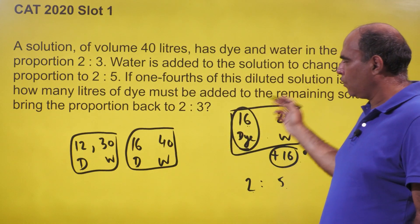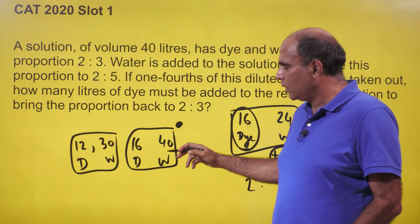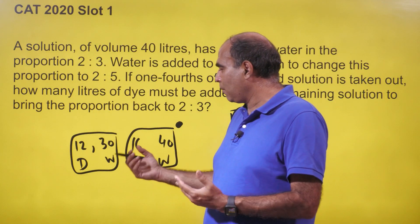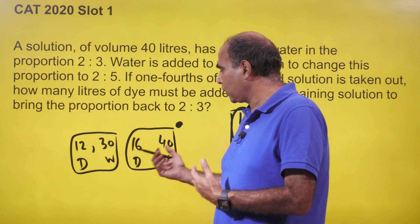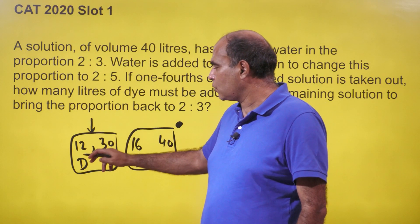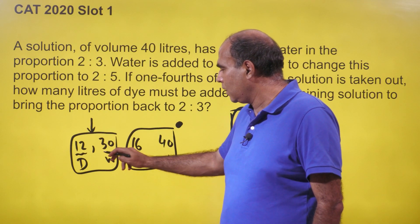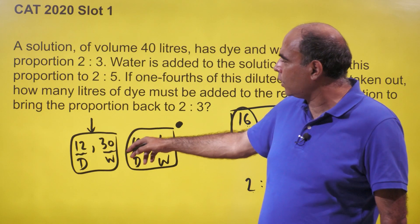If one-fourth of this diluted solution is taken out, they'll come in equal proportion. So dye will come out - you leave three-fourths, and water you leave three-fourths. So the remaining mixture has 12 dye (three-fourths of 16) and 30 water (three-fourths of 40).